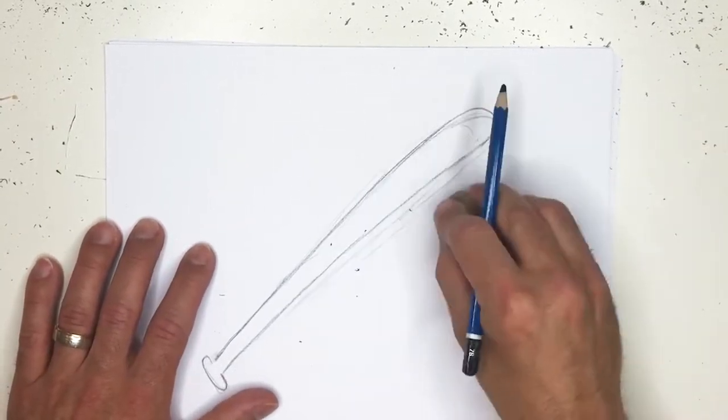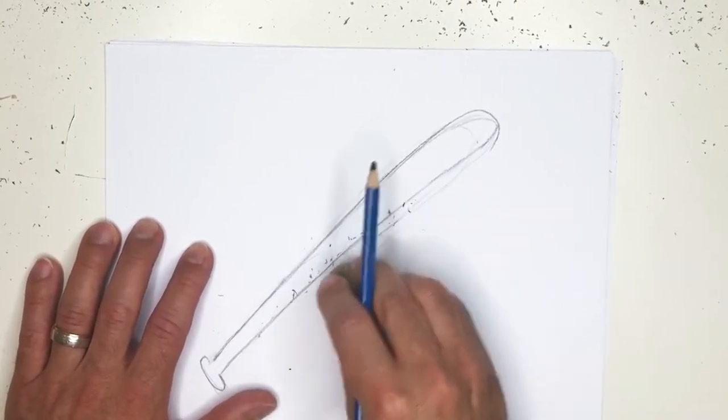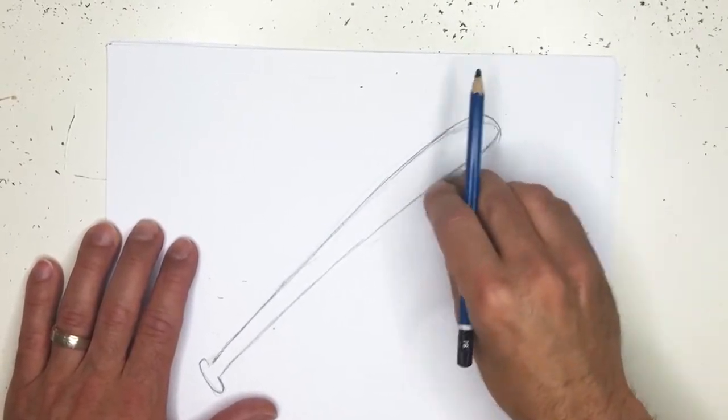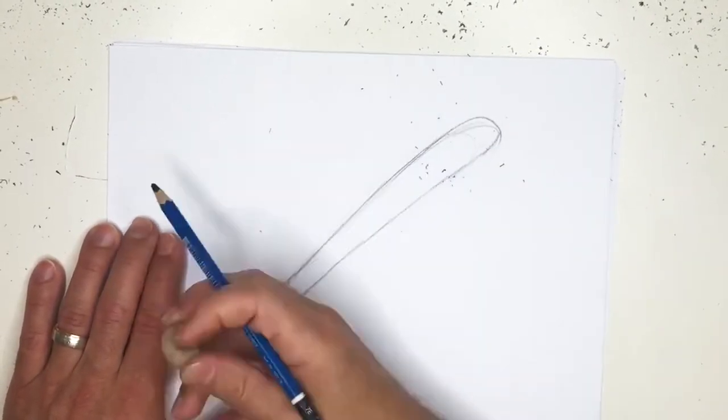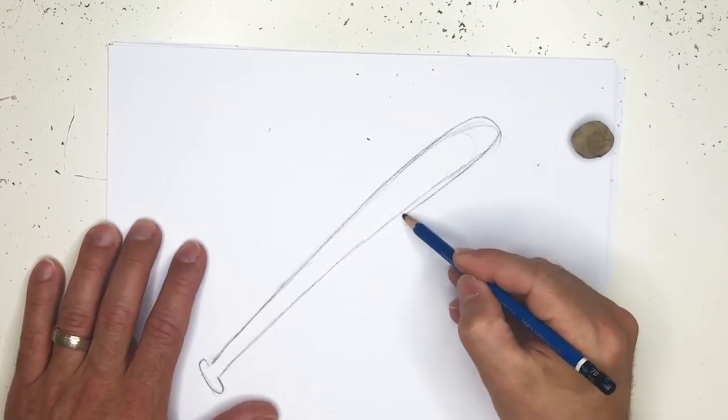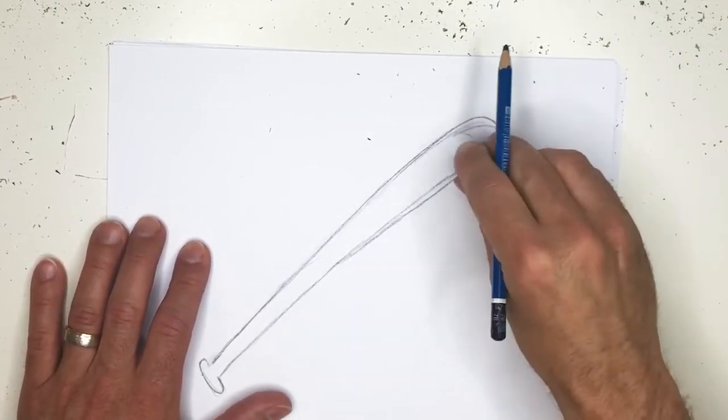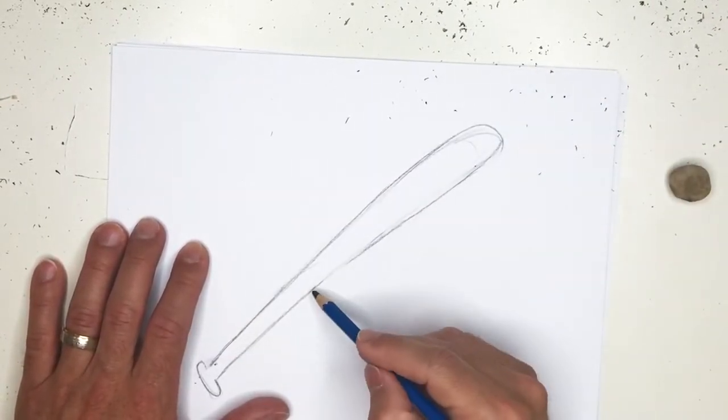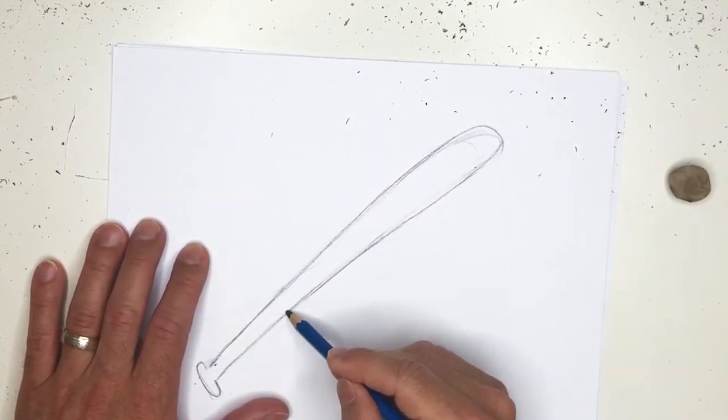In this video we'll draw like a classic wooden baseball bat that's used in like American Major League Baseball, but there's certainly other types of bats like softball bats or aluminum bats that can be used. But in this video I'm gonna draw the wood baseball bat. I'll actually draw some wood grains on there as well.